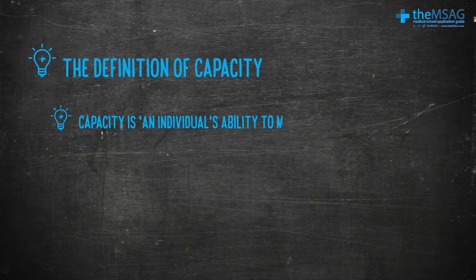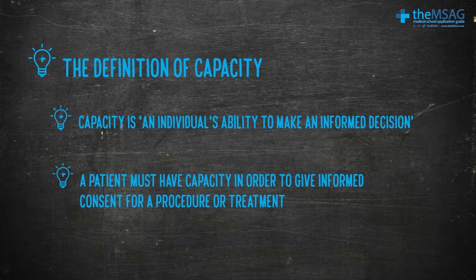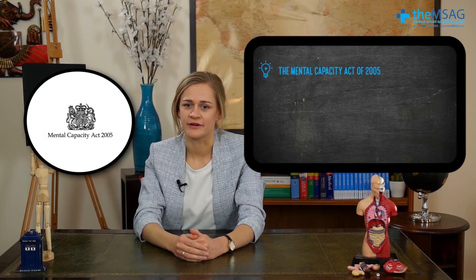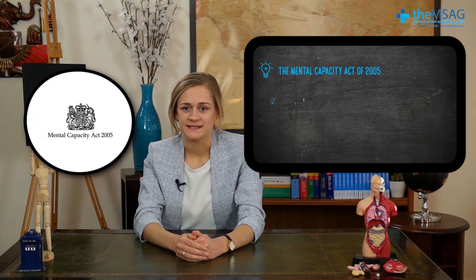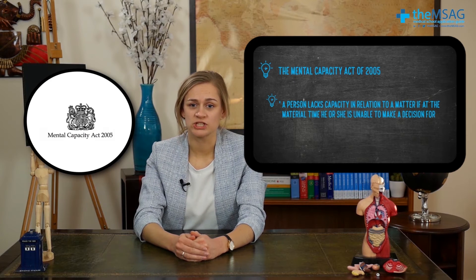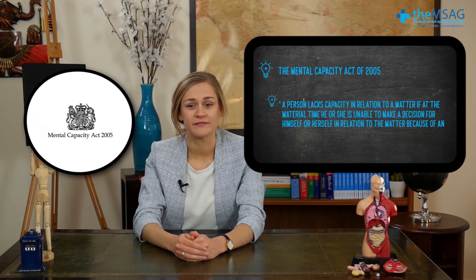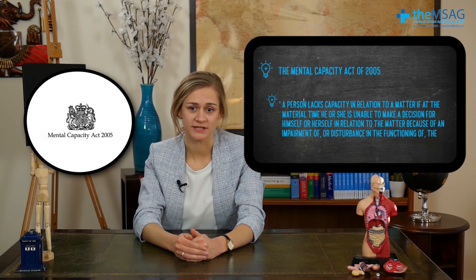Our next C to cover is capacity. Capacity is an individual's ability to make an informed decision. A patient must have capacity in order to give informed consent for a procedure or treatment. The Mental Capacity Act of 2005 expands on this by saying that a person lacks capacity in relation to a matter if, at the material time, he or she is unable to make a decision for himself or herself because of an impairment of or disturbance in the functioning of the brain or the mind.